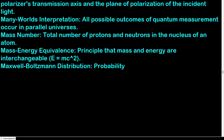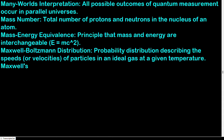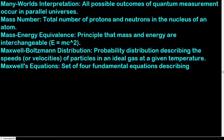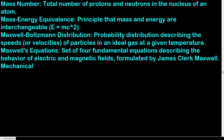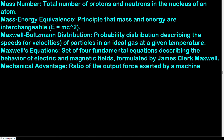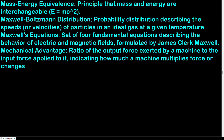Maxwell-Boltzmann distribution: probability distribution describing the speeds or velocities of particles in an ideal gas at a given temperature. Maxwell's equations: set of four fundamental equations describing the behavior of electric and magnetic fields, formulated by James Clerk Maxwell. Mechanical advantage: ratio of the output force exerted by a machine to the input force applied to it, indicating how much a machine multiplies force. Mechanical energy: sum of kinetic energy and potential energy in a system, conserved in the absence of non-conservative forces.